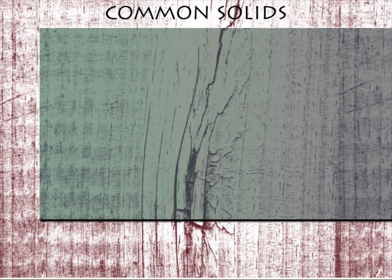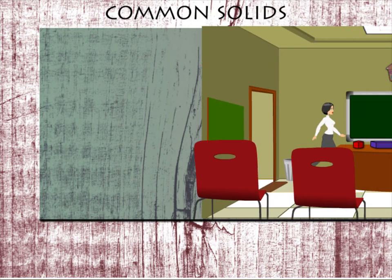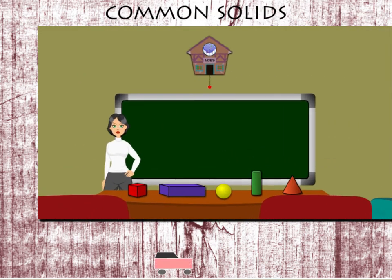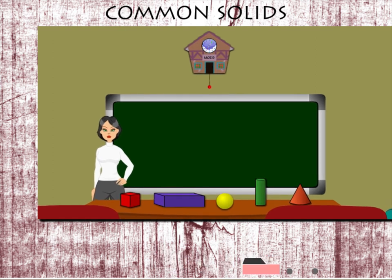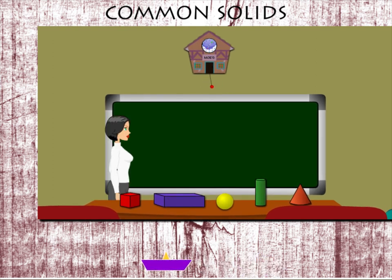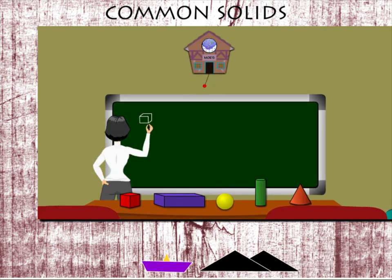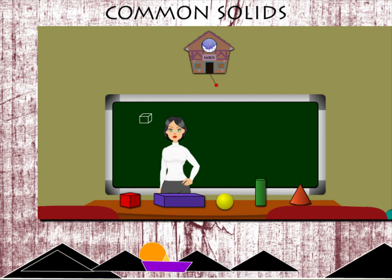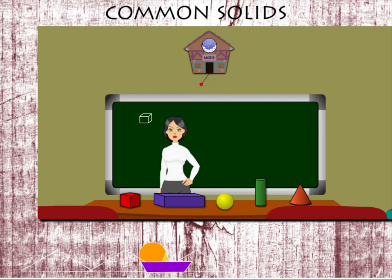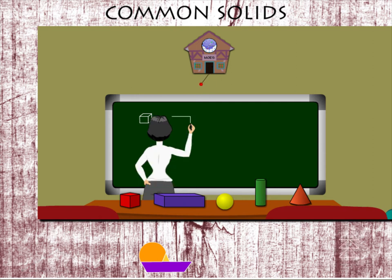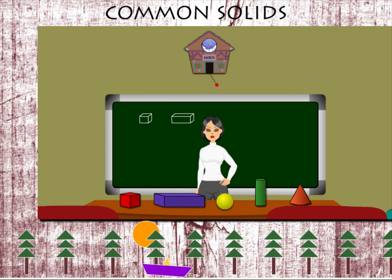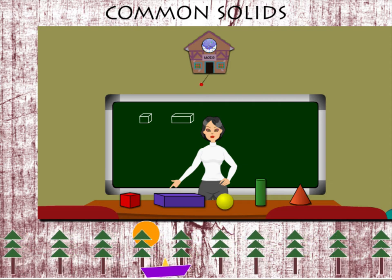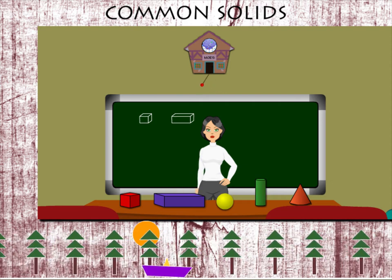Teacher Lucy is showing some solid blocks on her table and draws the shapes on the board. This is a cube — it has six equal sides. This is a cuboid, or a rectangular box, with three pairs of equal sides.